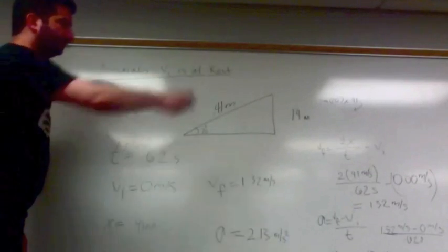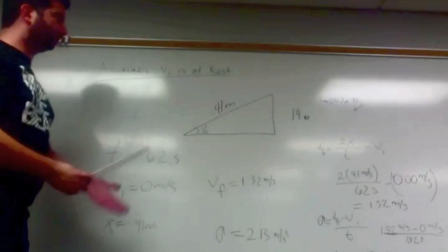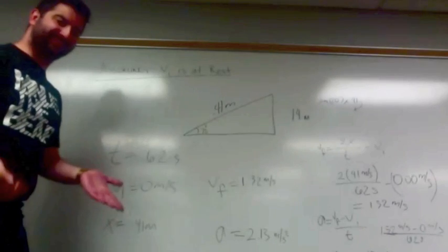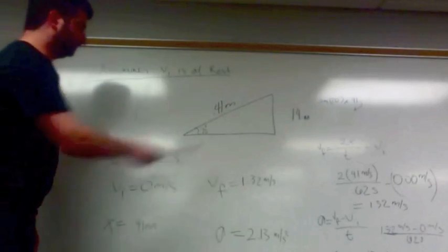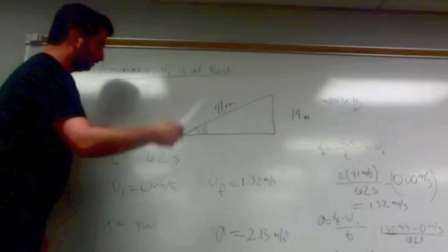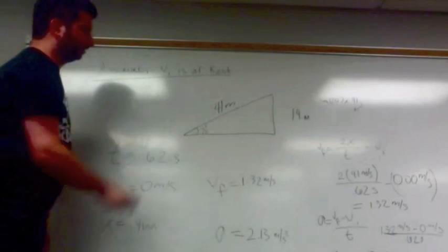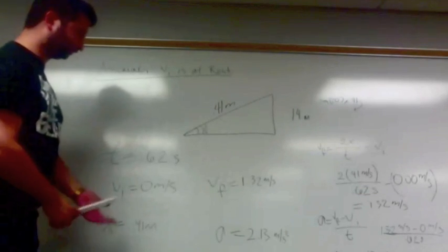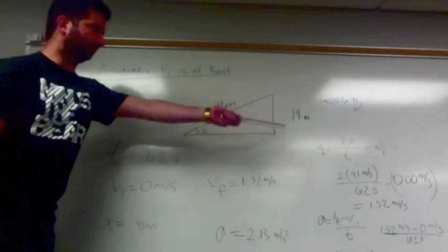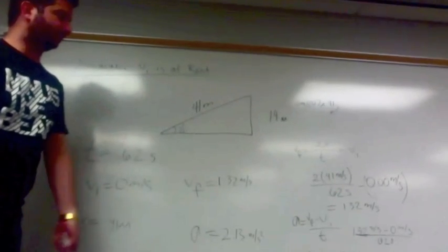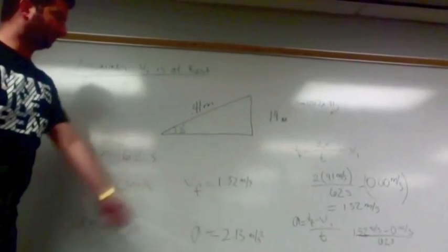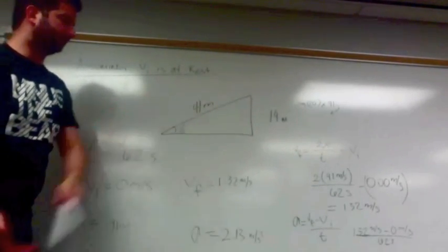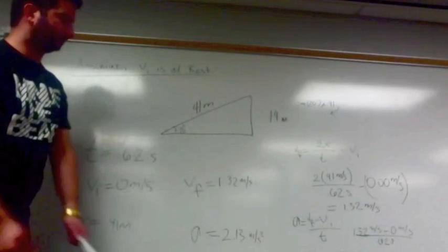After the pulley drops onto the second ramp, we're going to assume that our initial velocity is at rest. It's 0.41 meters and takes 0.62 seconds to travel down at a decline of 20 degrees. Using our equation to get final velocity, we find that our final velocity is 1.32 meters per second.